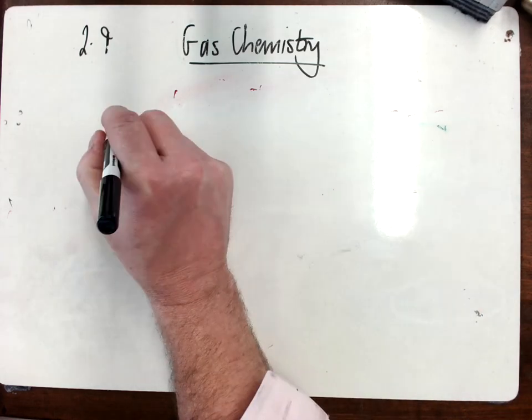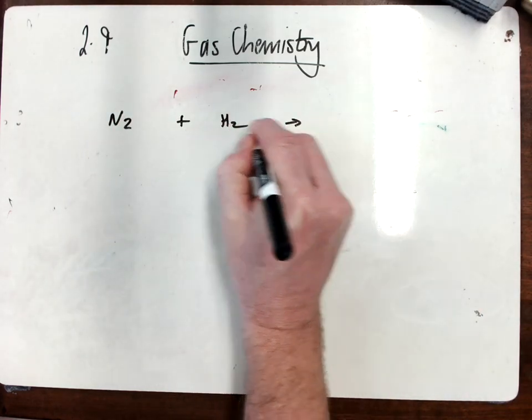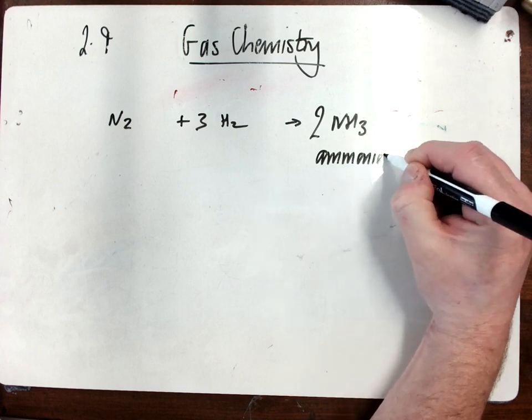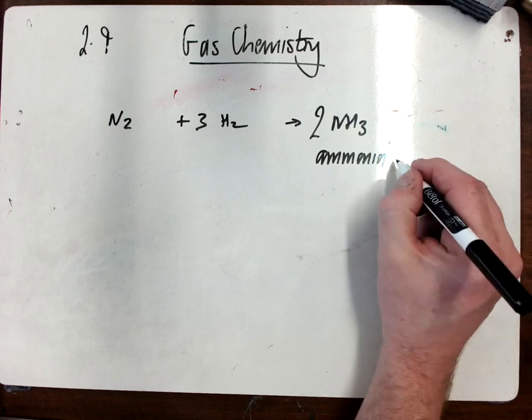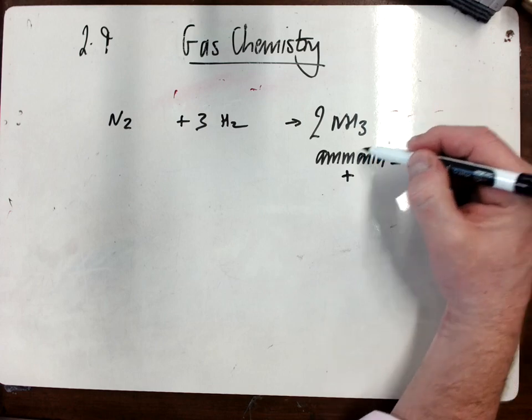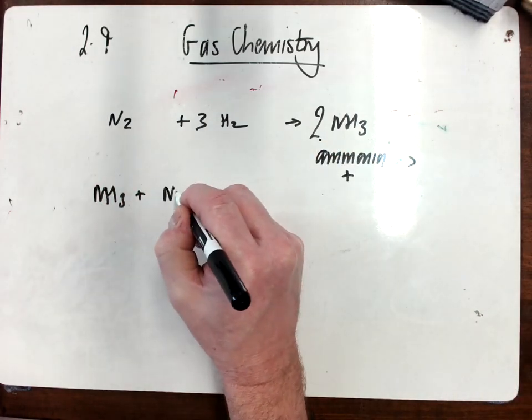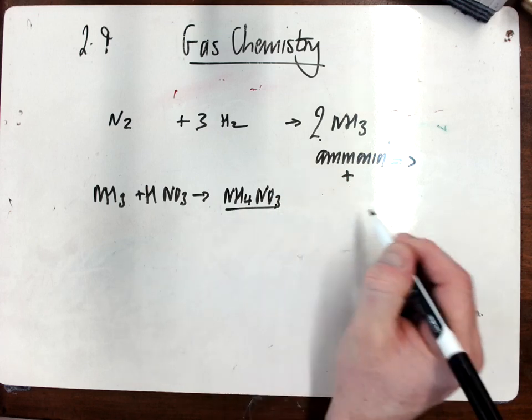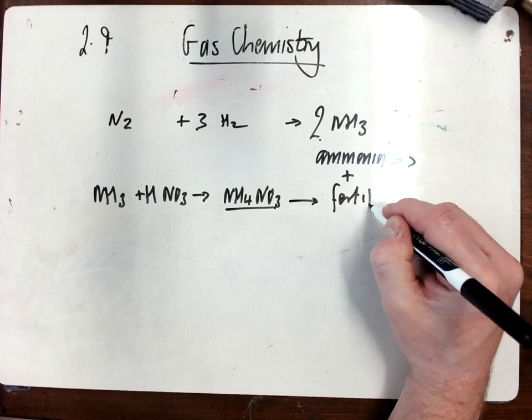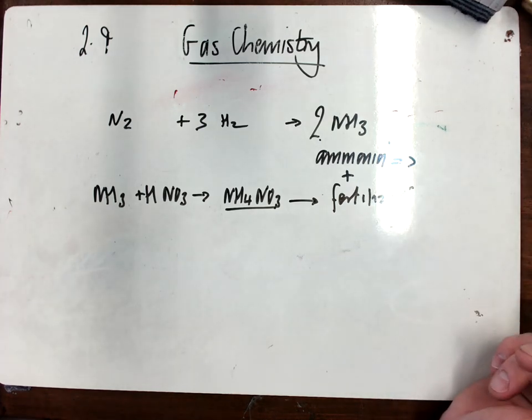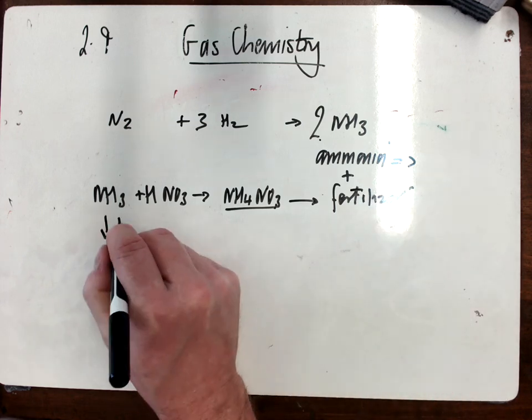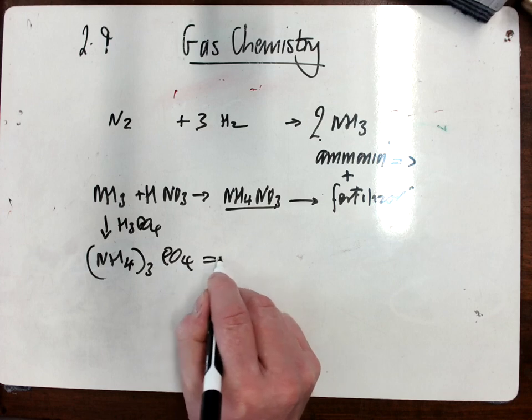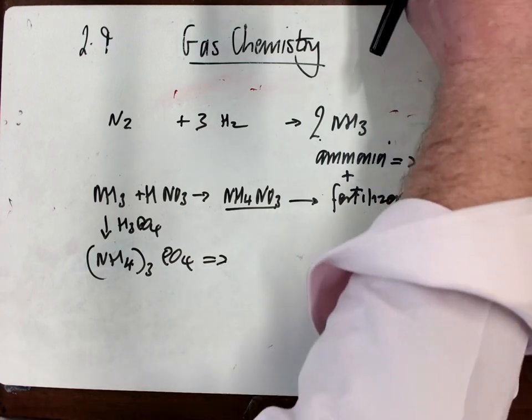From nitrogen we can make another very useful gas called ammonia by reacting nitrogen with hydrogen. Ammonia's main use is in fertilizers. It's used to react with other compounds. One that you may have if you're a farmer or gardener - you may have seen it reacted with nitric acid to give you ammonium nitrate, a fairly common fertilizer. It's also reacted with phosphoric acid, H3PO4, to give you another fertilizer called ammonium phosphate.